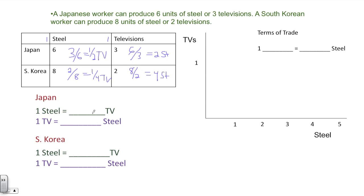Now, I'm going to take this information, and I'm going to plug it down here so it's easy to refer to. Again, for Japan, one steel costs them a half of a TV. One TV costs them two steel. For South Korea, one steel costs them one fourth of a TV, and one TV costs them four steel.